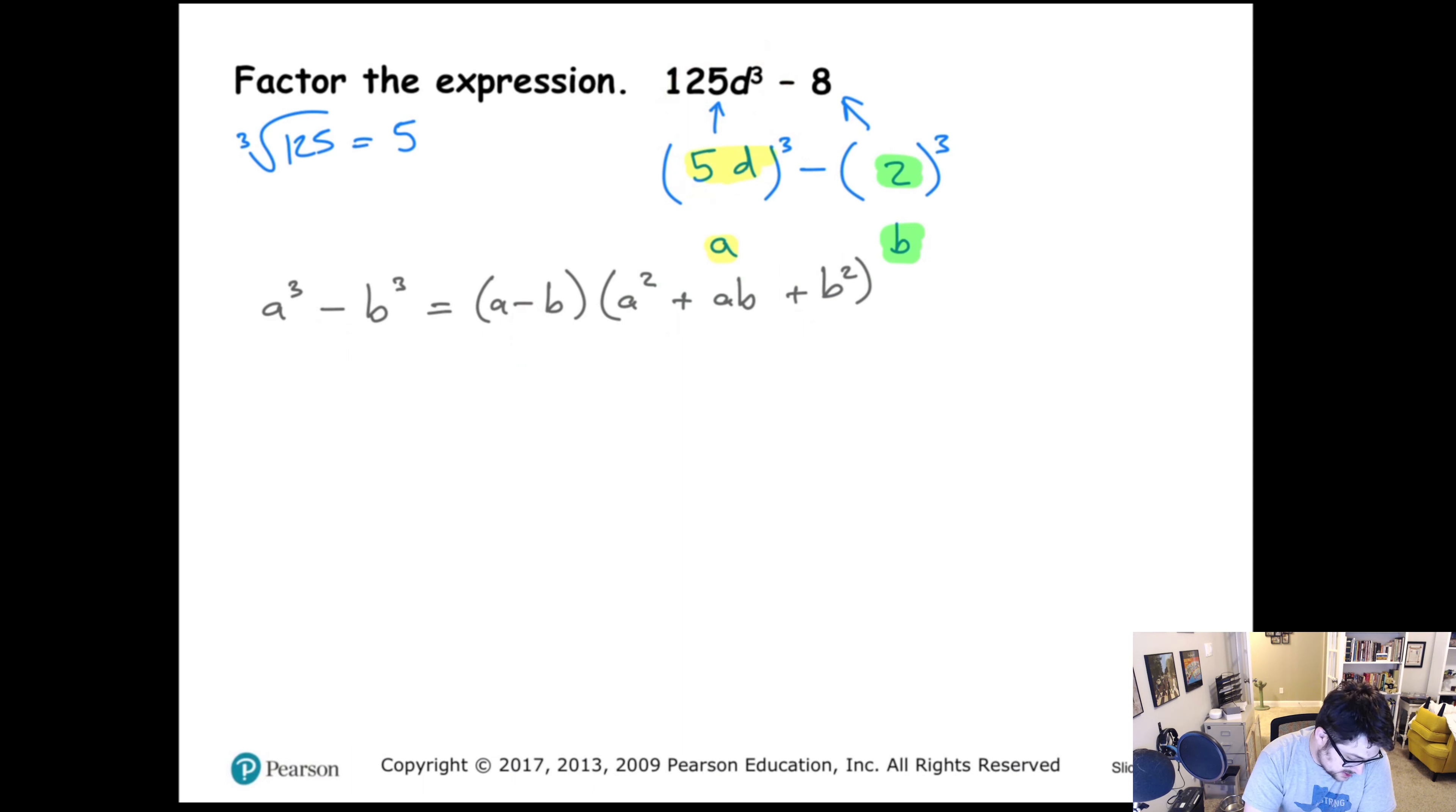Now, let's plug in 5d for a. What we'd have is we'd have 5d minus 2, 2's being plugged in for b, minus 2 for a minus b. Next thing is a squared. What we're going to do is we're going to square 5d. So if we square 5, we get 25. And if we square d, we get d². The next thing is plus a times b. What we're going to have is we're going to have 5d times 2. So 5d times 2 is 10. So we have 10d. The last thing is b squared. Well, 2 squared is 4.